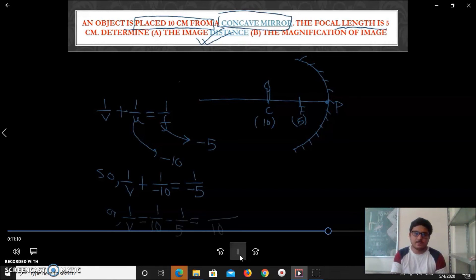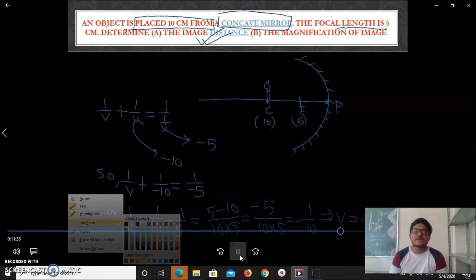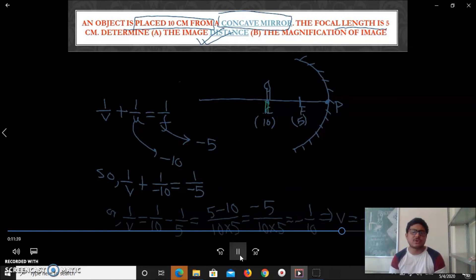It will come, we can cut this, so it will come -1/10. So v equals to -10. V equal to -10. So object distance is 10 cm, image distance also 10 cm. We know this situation: if object is at C, image will also be formed at C. So anyhow it's proved.